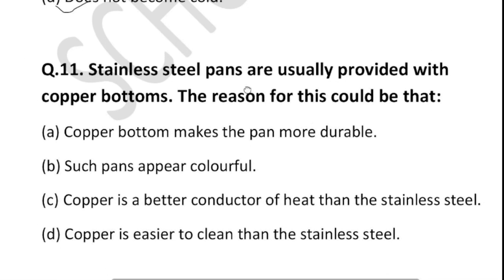The next question: stainless steel pans are usually provided with copper bottoms. The reason is that copper is a better conductor of heat than stainless steel. The copper bottom allows heat to be transferred more efficiently to the pan, so food is cooked better.